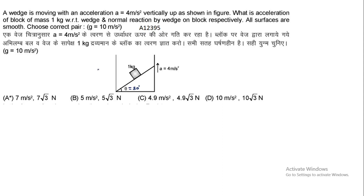A wedge is moving with an acceleration a = 4 m/s² vertically up as shown in the figure. What is the acceleration of block of mass 1 kg with respect to the wedge and normal reaction by wedge on block? यहाँ पर एक lift है, lift के अंदर एक wedge रखा हुआ है जिसका angle of inclination 30 degree है, और इस wedge के ऊपर 1 kg का block रखा हुआ है। यह lift ऊपर की तरफ a = 4 m/s² acceleration के साथ जा रही है।